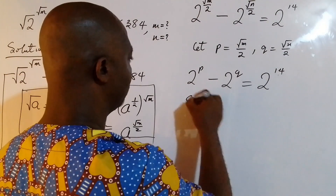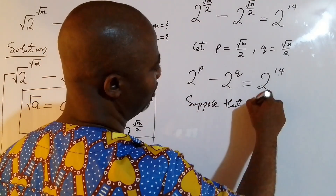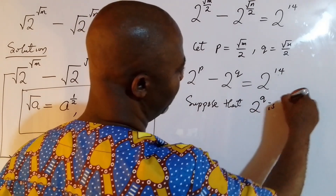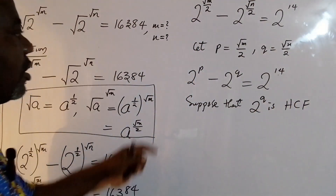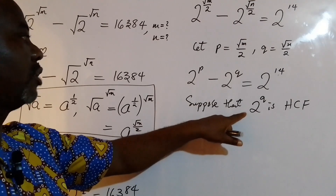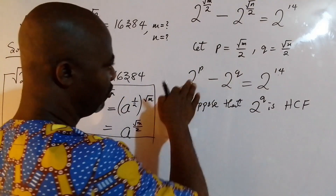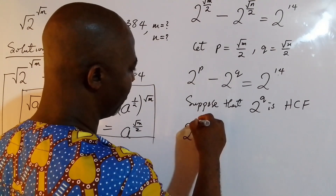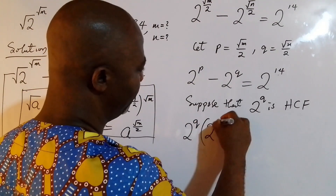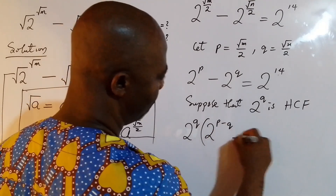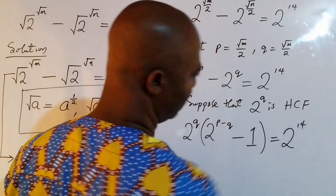Now suppose we take 2 to the power of q as the HCF on the left-hand side. The left side becomes 2 to the power of q, times the quantity 2 to the power of p minus q, minus 1, equals 2 to the power of 14.